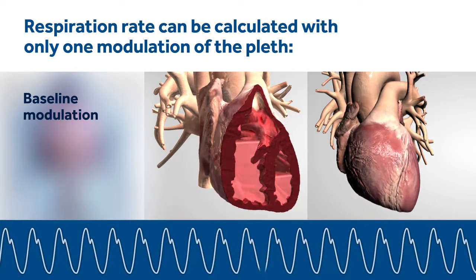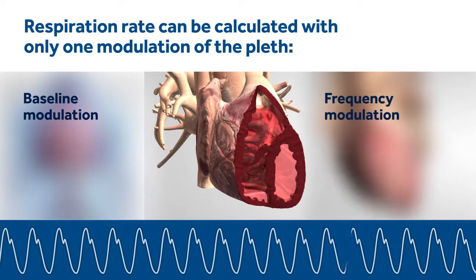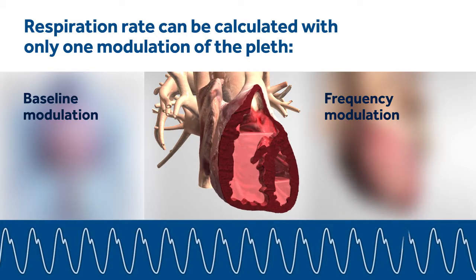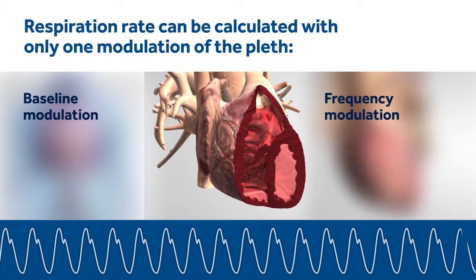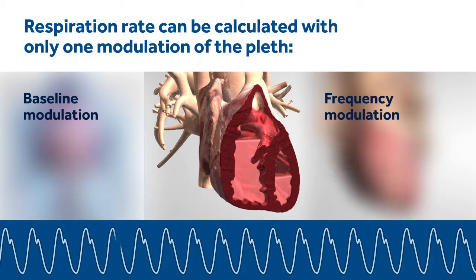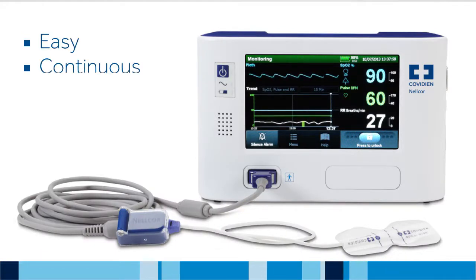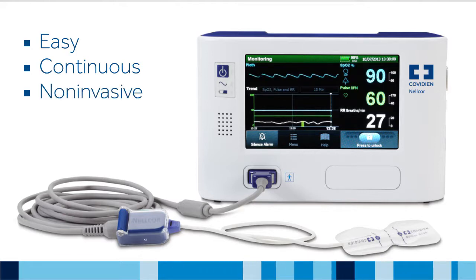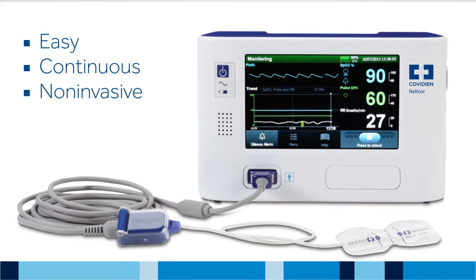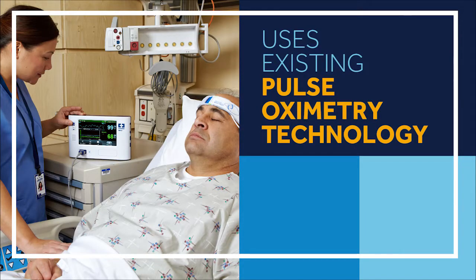If a different patient demonstrates a change in pleth waveform frequency modulation, the algorithm can post an accurate respiration rate based on that data alone or in conjunction with a change in pleth waveform amplitude and/or baseline modulation. With Nelcore respiration rate software, clinicians are now able to easily, continuously and non-invasively monitor a patient's respiration rate and changes that may be associated with respiratory compromise, using the same technology, similar sensors and familiar workflow used in continuous pulse oximetry monitoring.